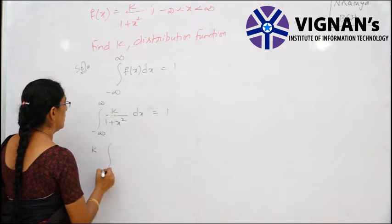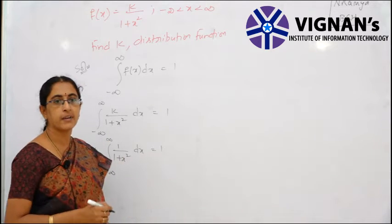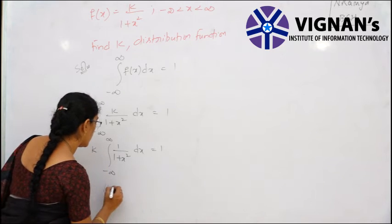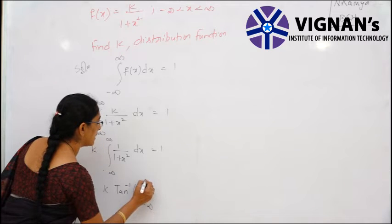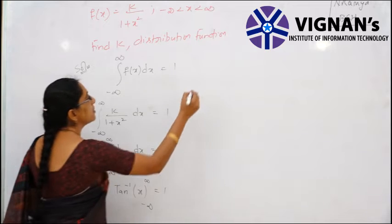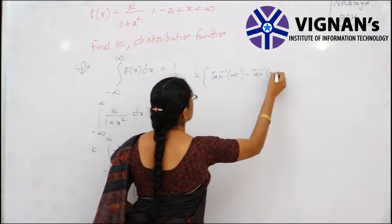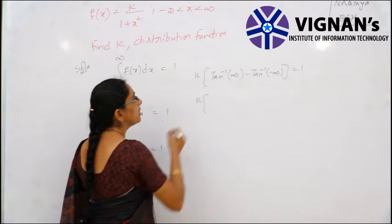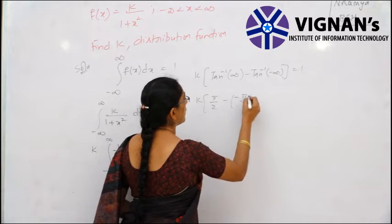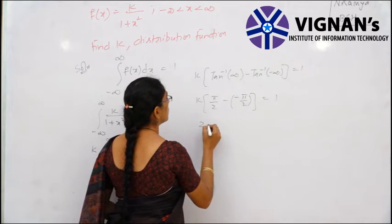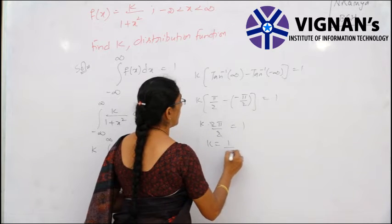To find k, use ∫₋∞^∞ f(x)dx = 1. So k·∫₋∞^∞ 1/(1+x²) dx = 1. Since ∫1/(1+x²)dx = tan⁻¹(x), we get k·[tan⁻¹(∞) − tan⁻¹(−∞)] = k·[π/2 − (−π/2)] = k·π = 1. Therefore k = 1/π, and the density function is f(x) = 1/π · 1/(1+x²).